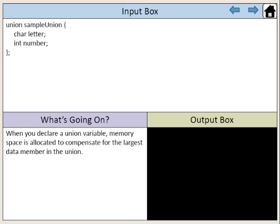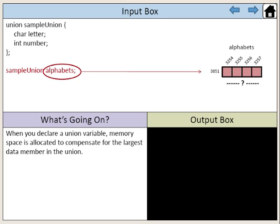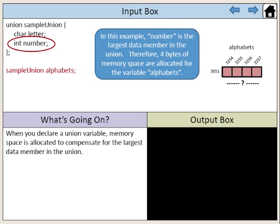When you declare a union variable, memory space is allocated to compensate for the largest data member in the union. We have now declared the variable alphabets using our user-defined data type SampleUnion. In this example, number is the largest data member in the union. Therefore, four bytes of memory space are allocated for the variable alphabets.